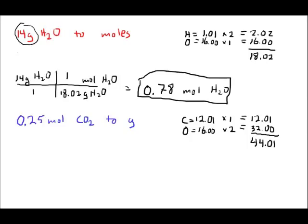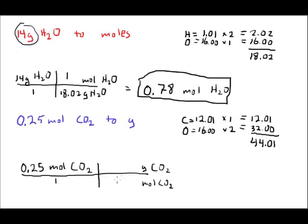So my dimensional analysis to do this conversion. I want to start out here with 0.25 moles CO2 and I'm going to convert from moles CO2 to grams CO2. So when I calculated molar mass I found this relationship. Every 1 mole of CO2 has a mass of 44.01 grams.